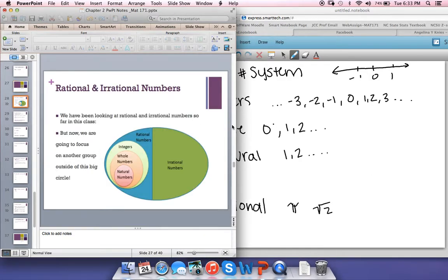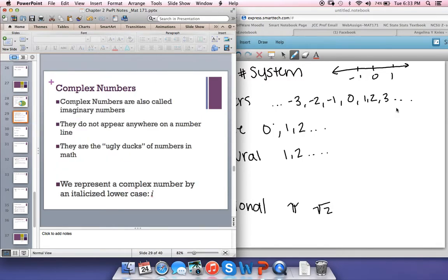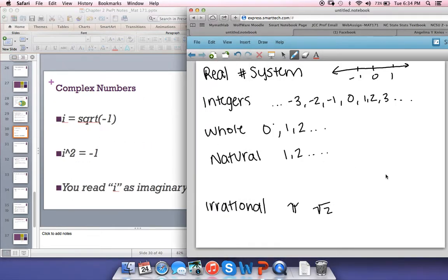Now, what I'm going to show you is there's another group. Imagine a circle right over here of numbers that exist that you haven't focused on yet. What are those numbers? They're not numbers on the real number system. Instead, they're called complex numbers. We also refer to complex as imaginary numbers. They don't appear on the number line. I can't mark them anywhere on this line. They're your ugly ducks of numbers in math. They're the ones that just don't fit in. They don't go on the line. They can't. Nowhere. The way we represent complex numbers is by this imaginary number represented by a lowercase italicized letter i. As soon as you see that i, you know that you're dealing with a complex number.